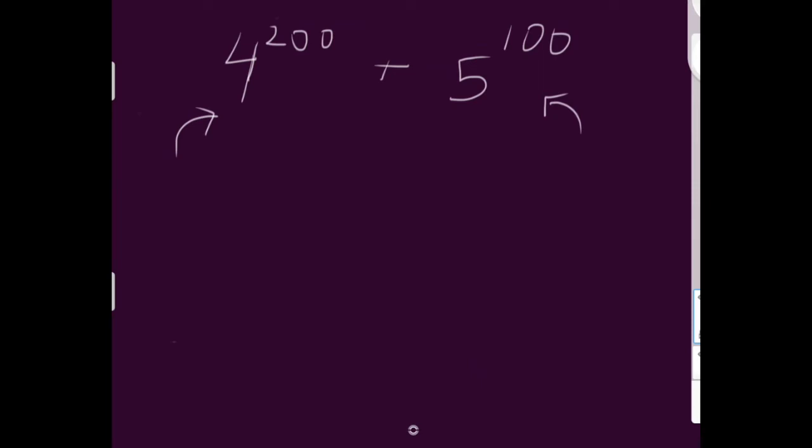So we can get started by separating this equation into its individual components: 4 to the 200 and 5 to the 100. Starting with 4 to the 200, this is basically, we've already seen this pattern, right? 4 to the 200. It goes 4 and 16, which ends in 6. 64 ends in 4. 256 ends in 6. We already know that pattern. And we know that every even one ends in 6. So 4 to the 200, because 200 is even, will also end in 6.